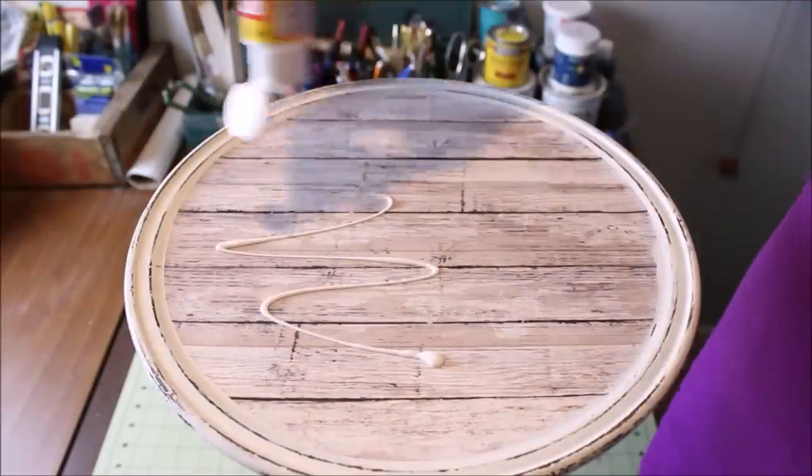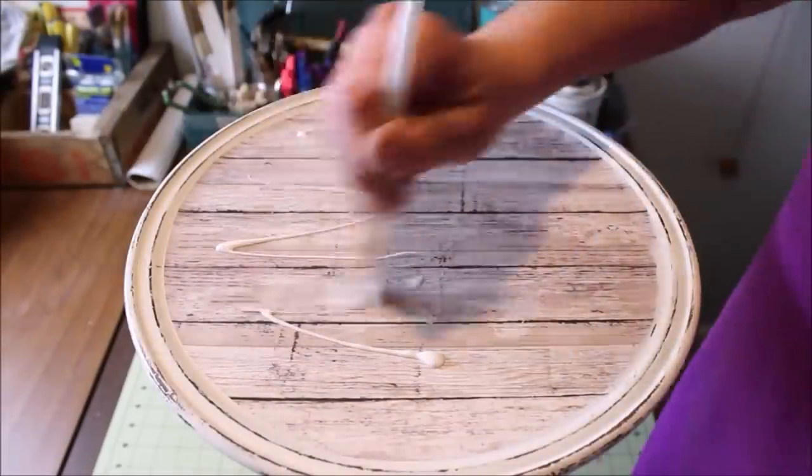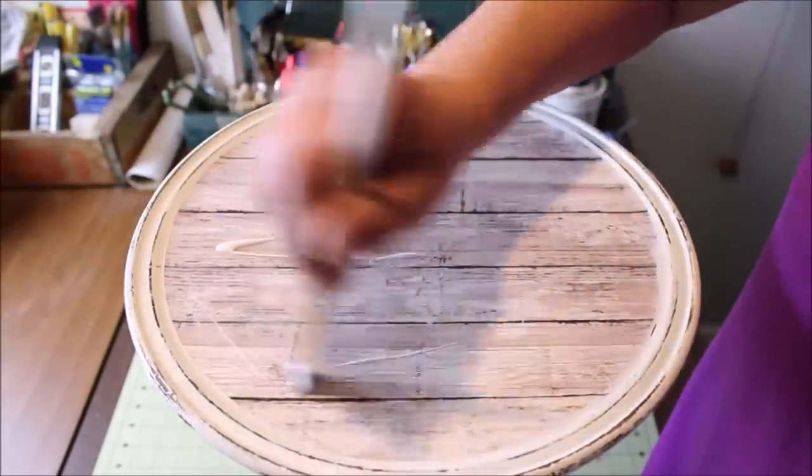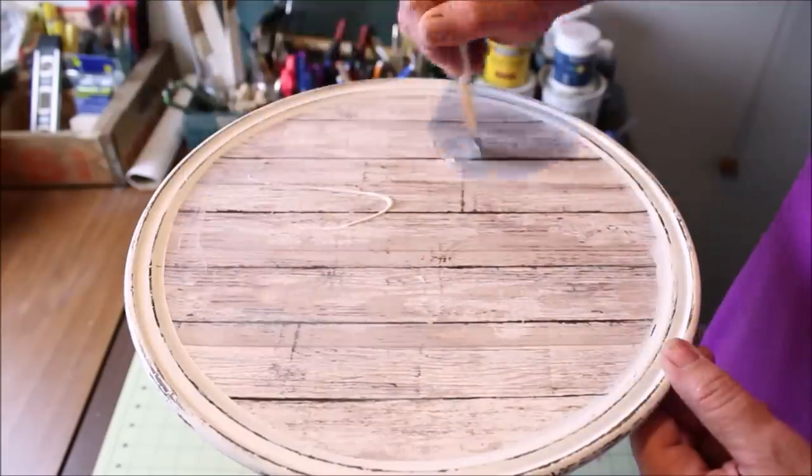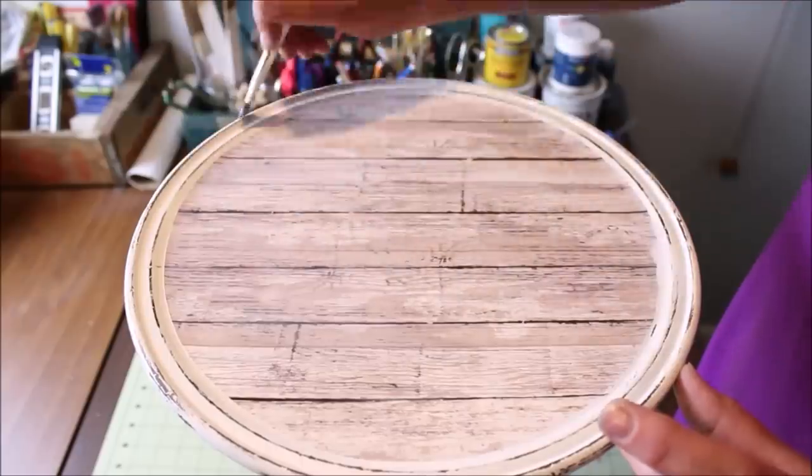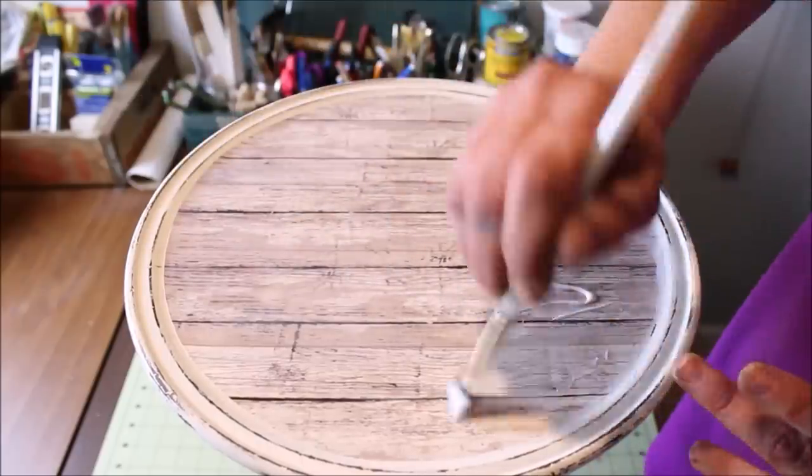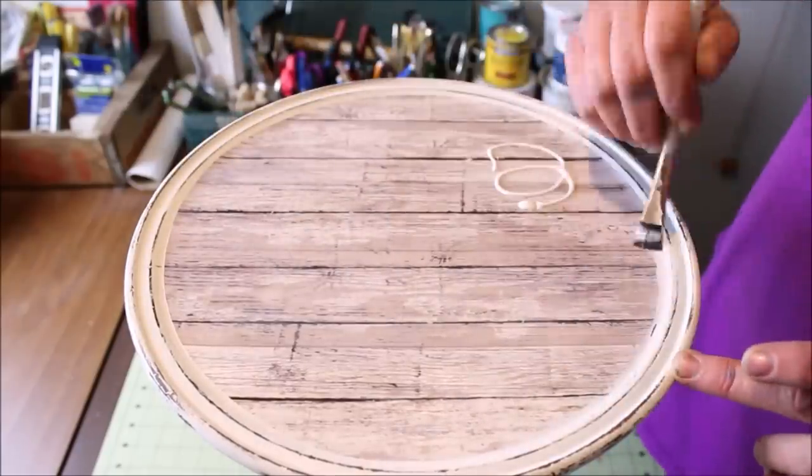Once the first coat of Mod Podge had dried, I applied another coat on top of the paper to seal it in and use as a top coat. After allowing the final coat to dry, my table was complete.